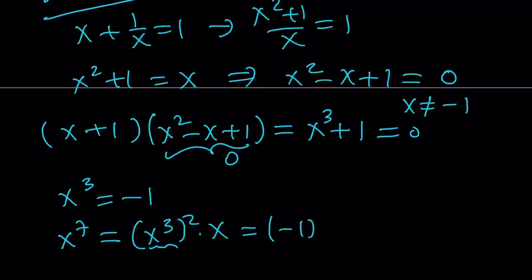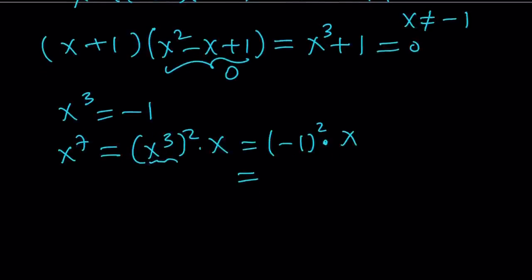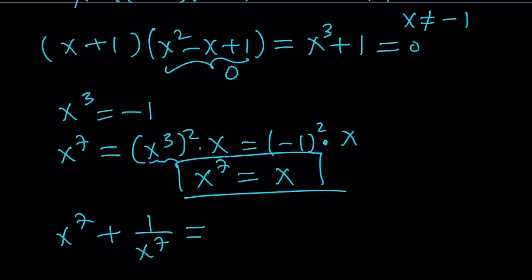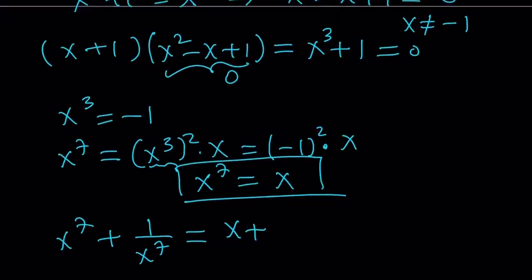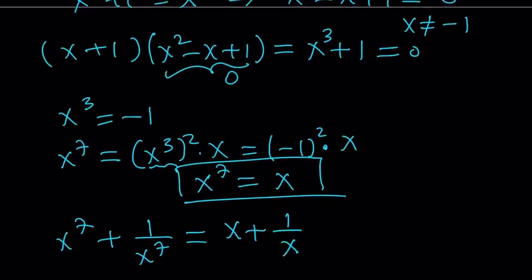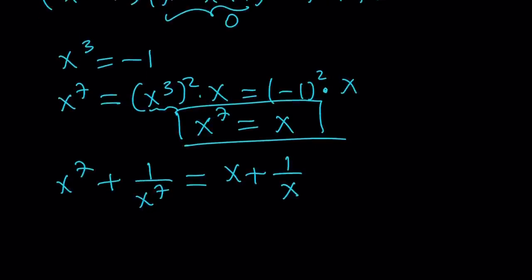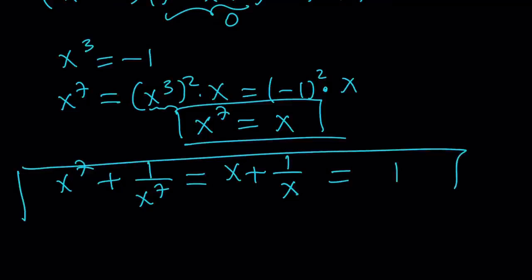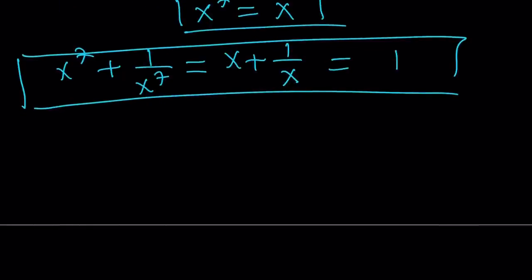If some folks complain that I talk too fast, if I talk too slow, people are going to say I'm trying to make the video longer. Anyways, it's hard to please everyone. So x to the 7th power from here equals x. This is super duper awesome. Because now it allows you to write x to the 7th plus 1 over x to the 7th as x plus 1 over x. Because x to the 7th equals x. Isn't that beautiful? And we know that x plus 1 over x equals 1. Therefore, the answer is 1. This brings us to the end of the second method and to the beginning of the third method.